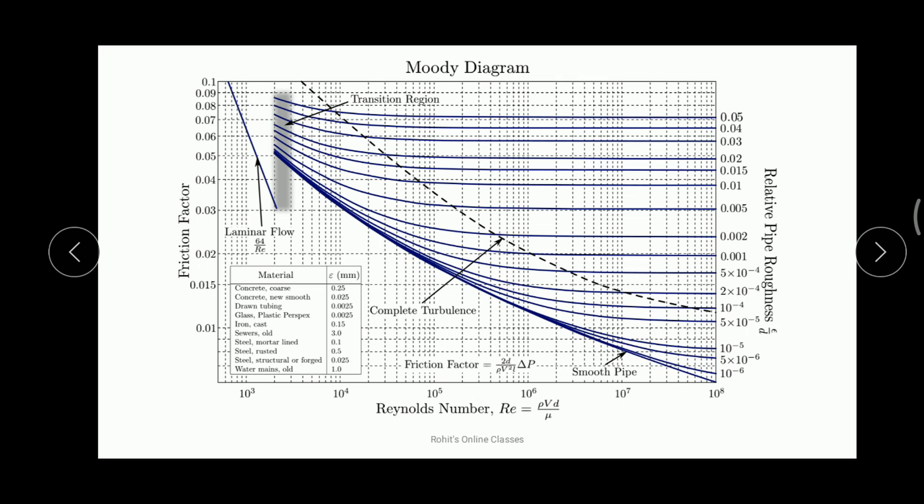In the Moody's diagram, the y-axis shows the friction factor f, and the x-axis shows the Reynolds number — using diameter D instead of L. On the other side, the relative pipe roughness, epsilon divided by D, is also shown. Together these three axes form the complete graphical representation of Moody's diagram.